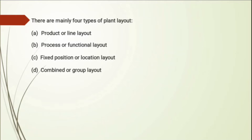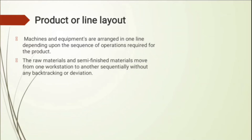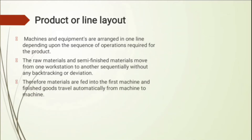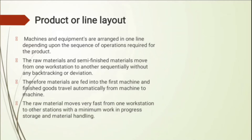The first one is the product or line layout, in which machines and equipment are arranged in one line depending upon the sequence of operations required for the product. Machines are placed in proper sequence and products move from one machine to another sequentially without any backtracking or deviation. Raw materials move very fast from one workstation to another with minimum work in progress.